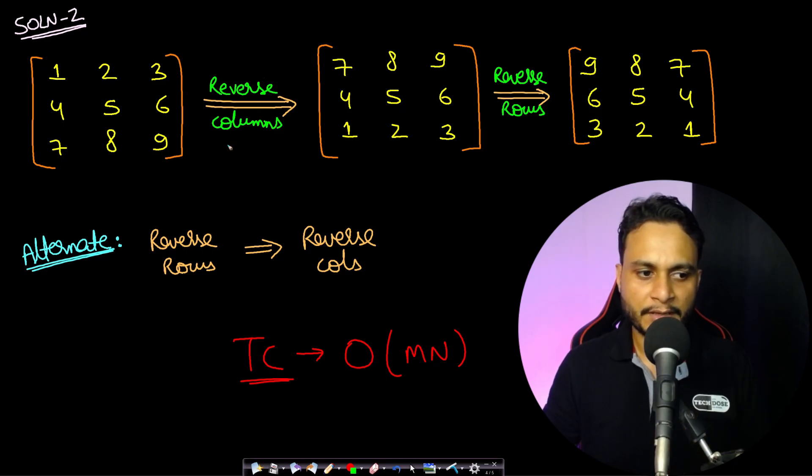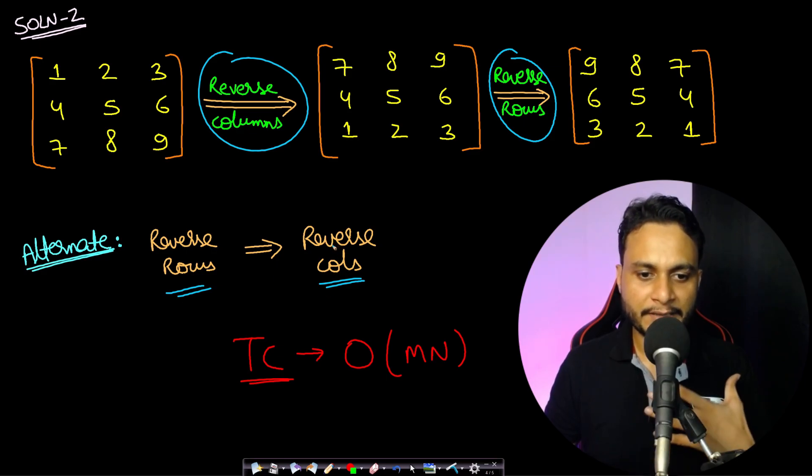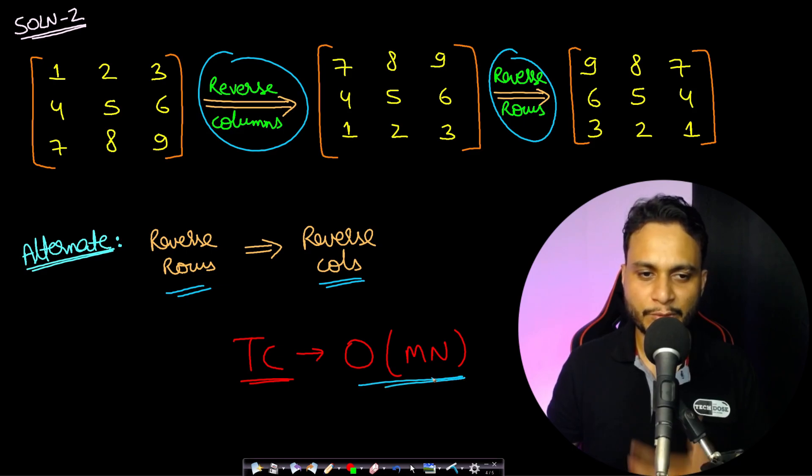Otherwise you can even do the reverse rows first and followed by that you can do the reverse columns as the second step. Both will have the same effect and this doesn't require any extra space as well. And the time complexity is again order of m*n. So this is in-place algorithm and the most optimal one.